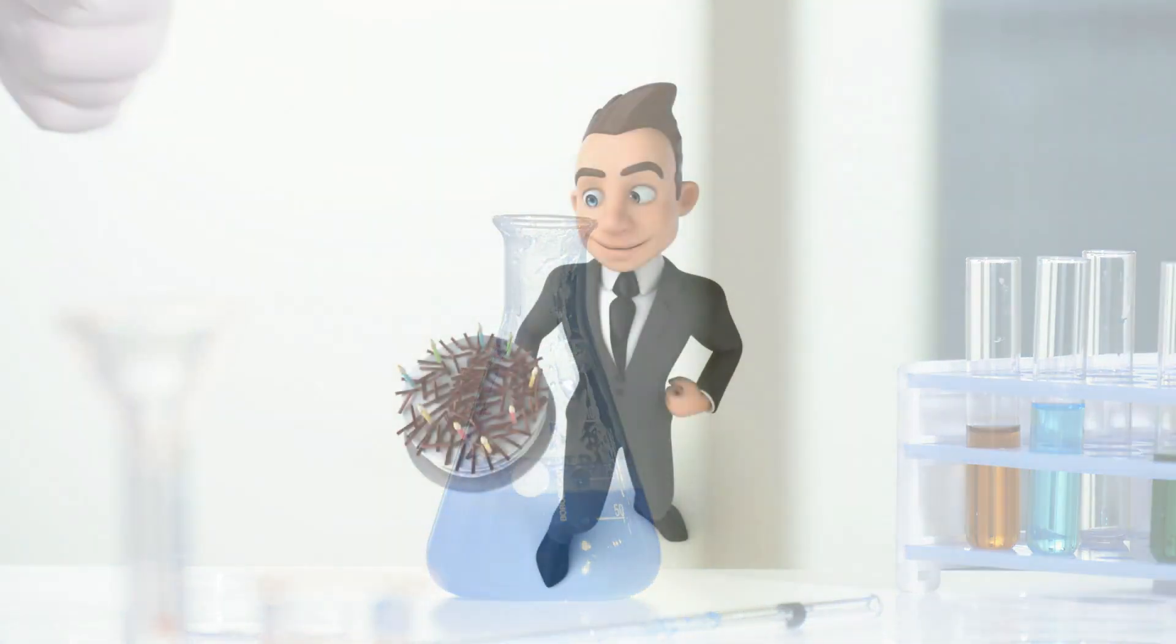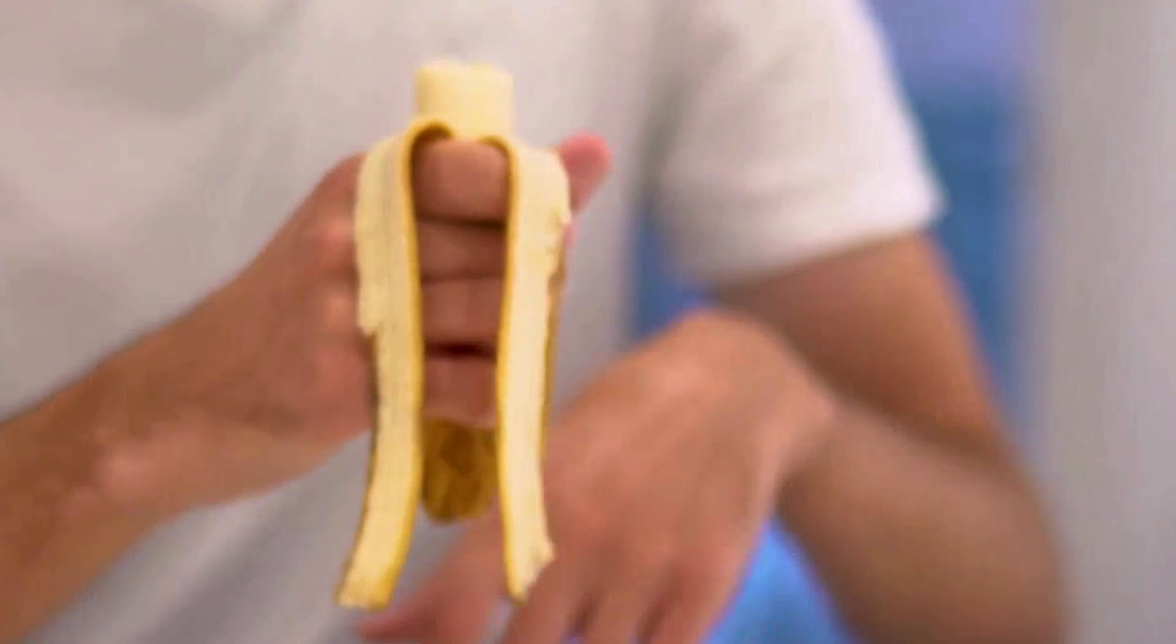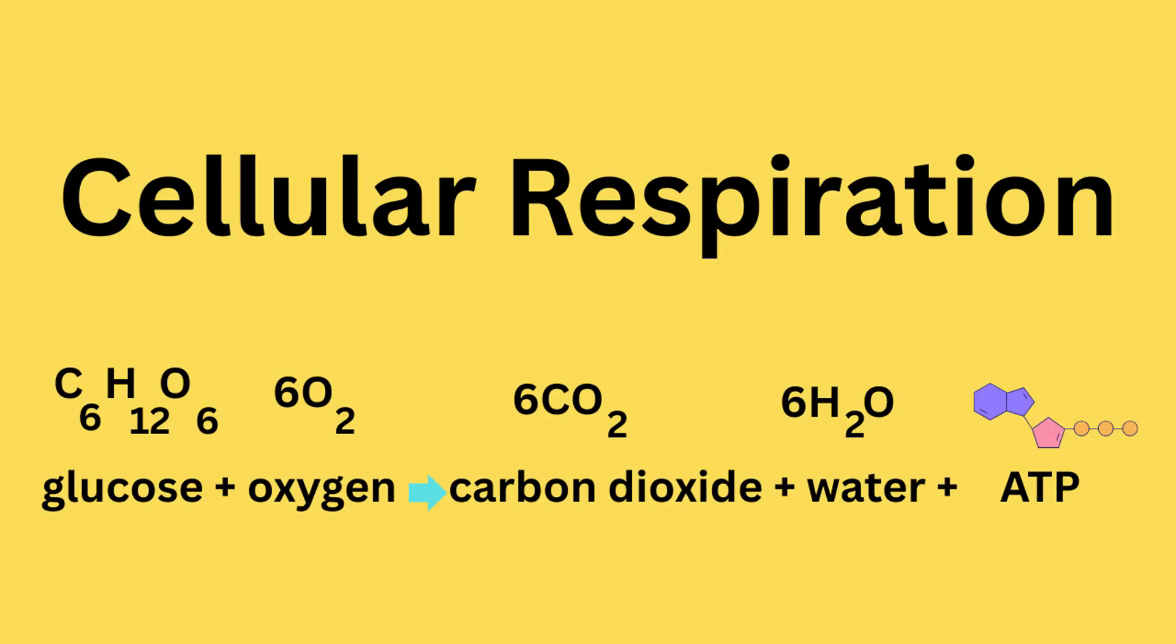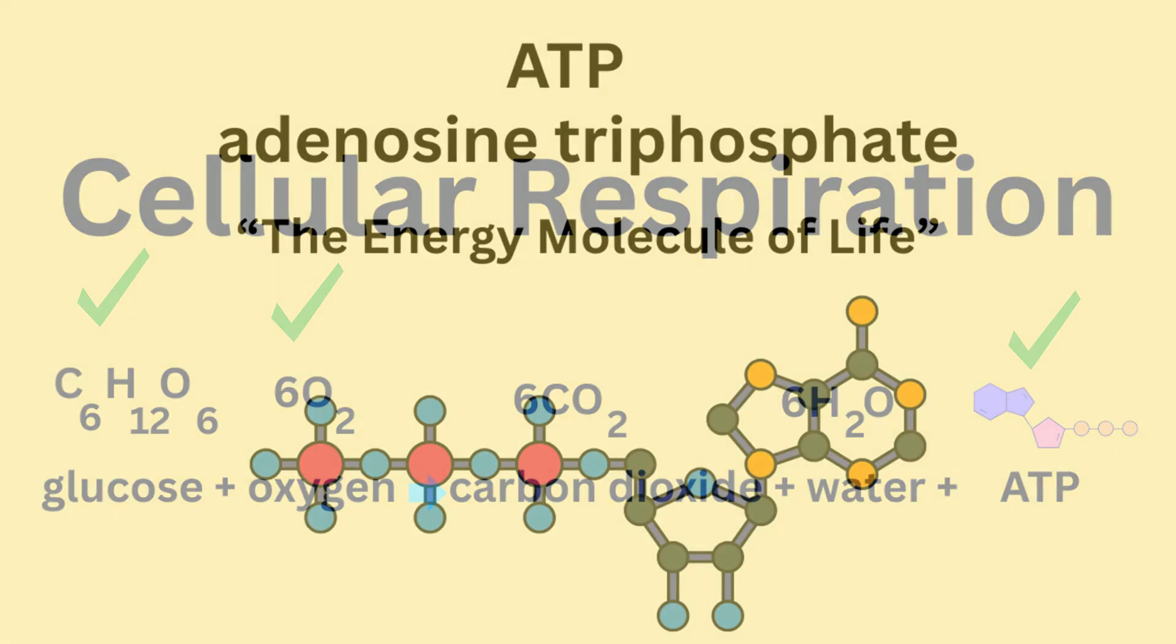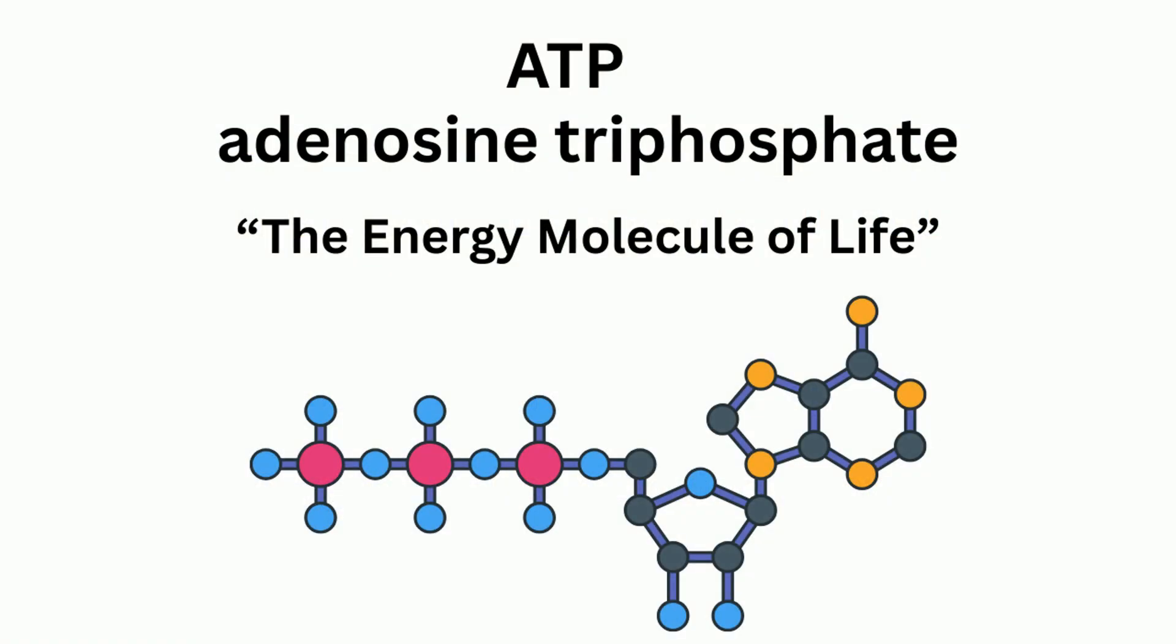Take food for example. When you eat a banana, your body breaks down the molecules and releases the chemical energy inside. The molecule glucose is combined with oxygen and is transformed into the energy molecule of life, ATP. That's what powers your muscles and brain.